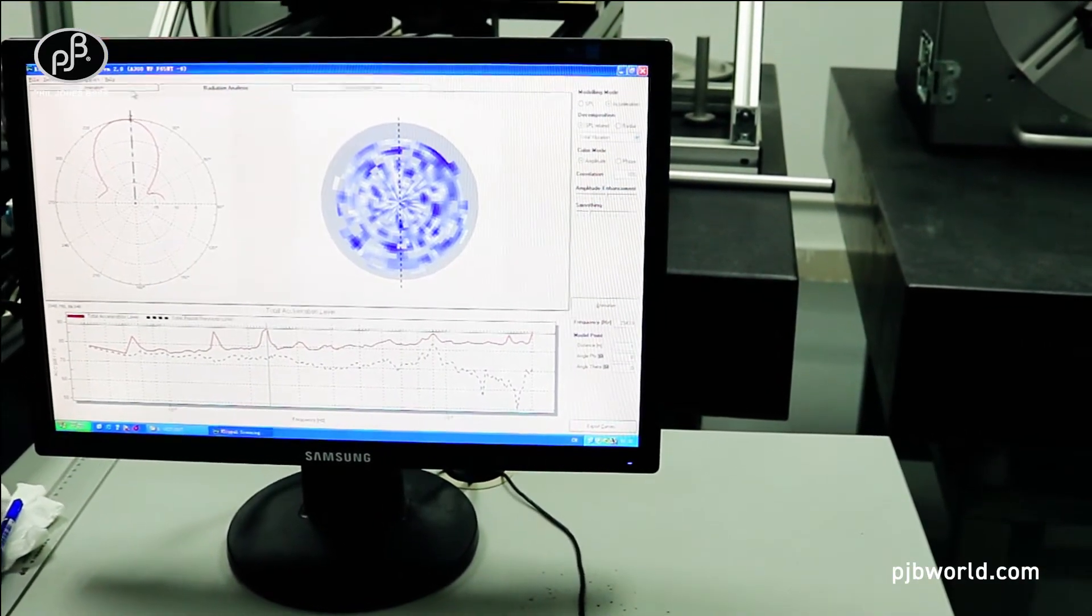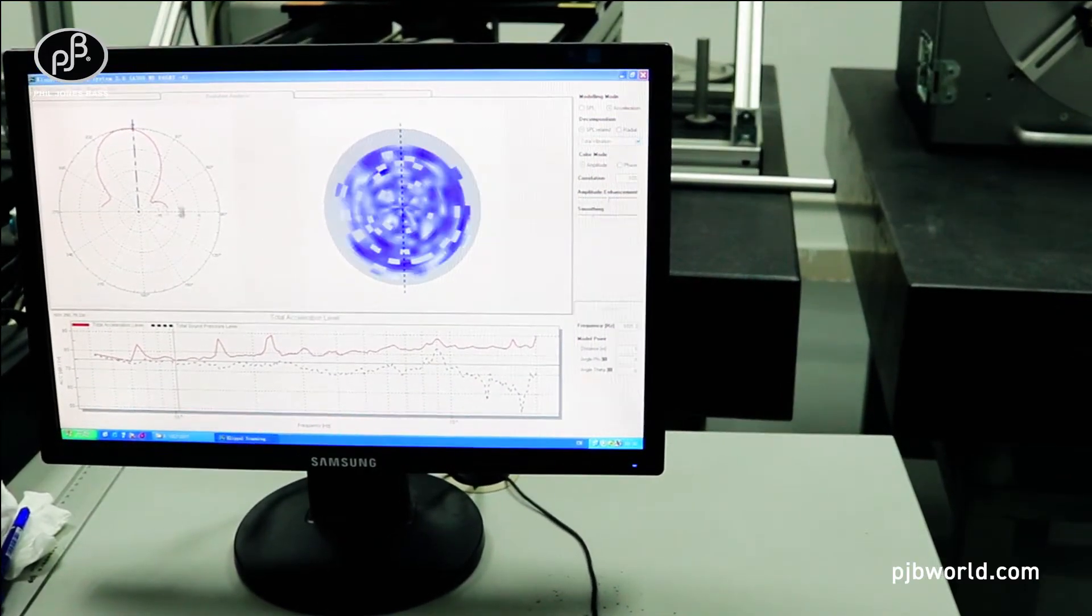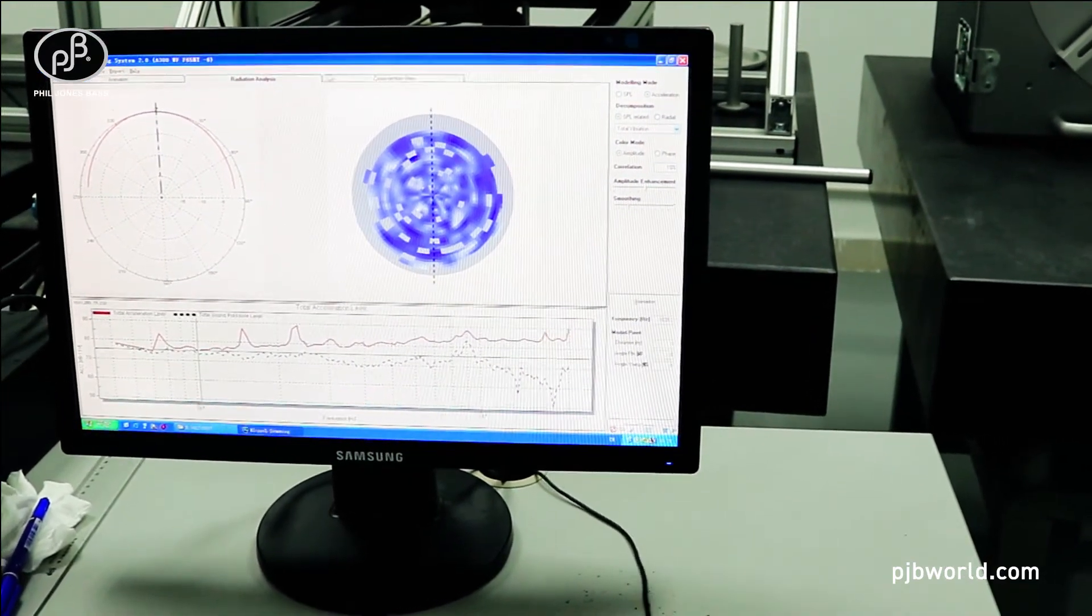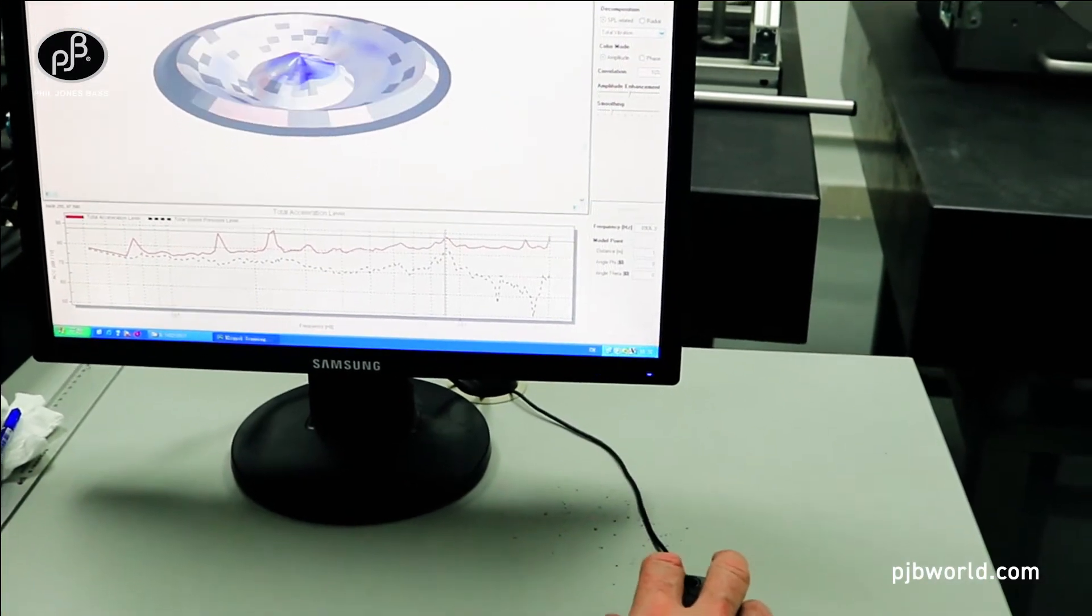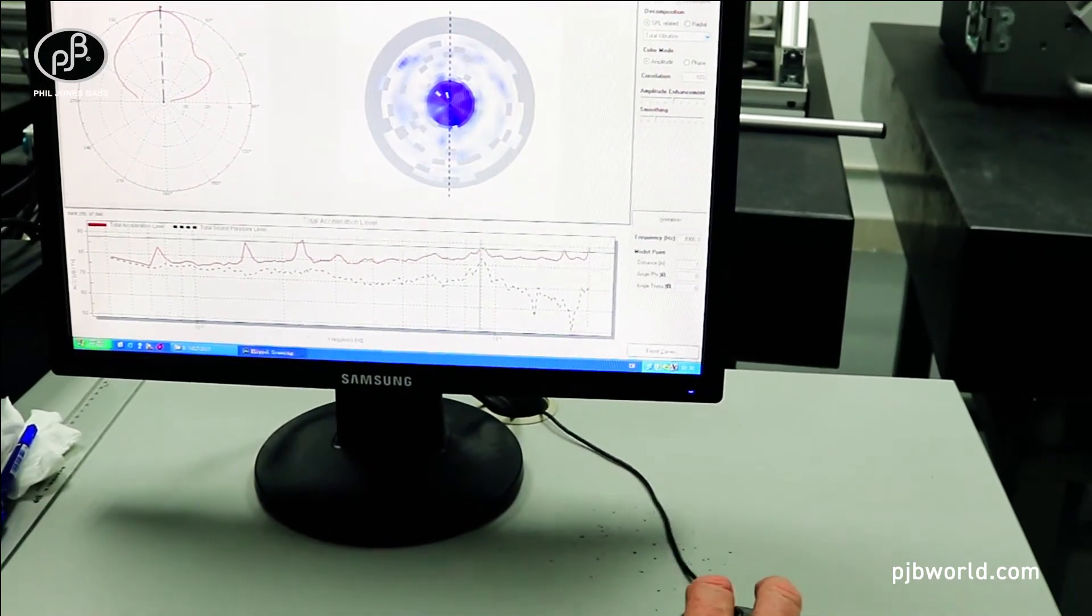The radiation analysis here, we can shift it down to around here and see how it will widen out. It's almost like 180 degree dispersion. And when you get up to somewhere like here and look at the radiation analysis, it's like a polar response through the dispersion of the speaker.